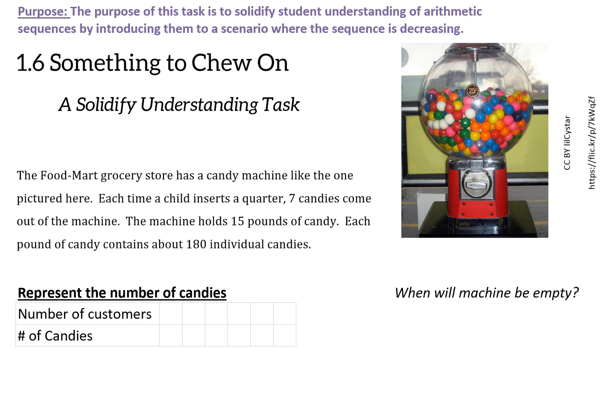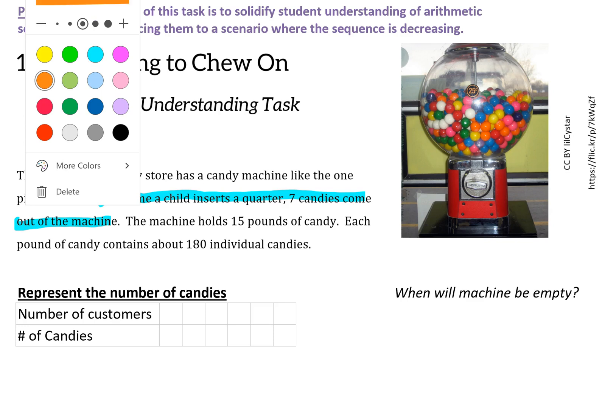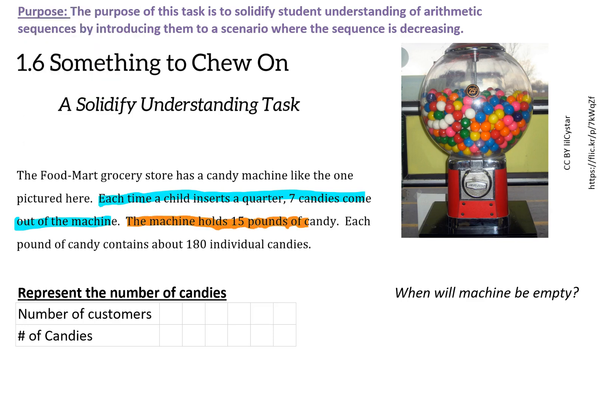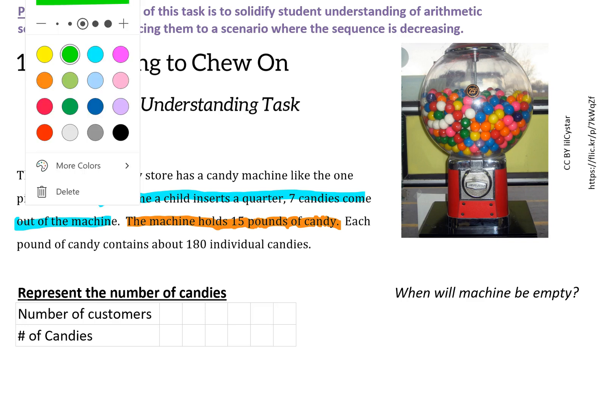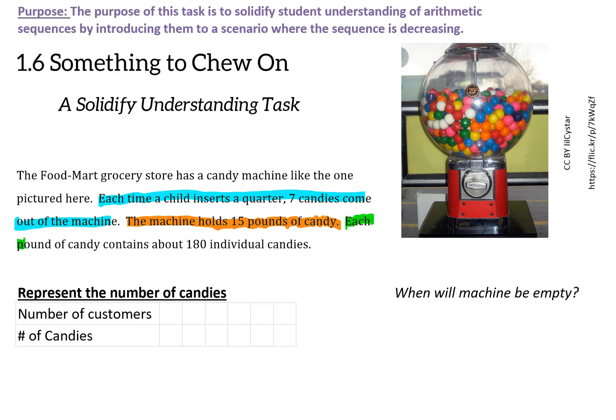We have the Food Mart grocery store with a candy machine. Each time a child inserts a quarter, seven candies come out of the machine. The machine holds 15 pounds of candy, and each pound contains about 180 individual candies.